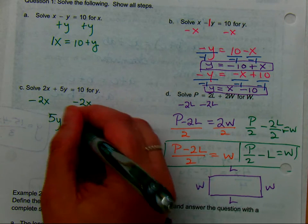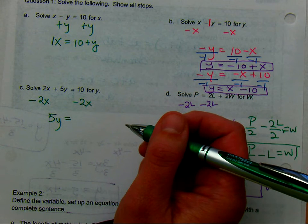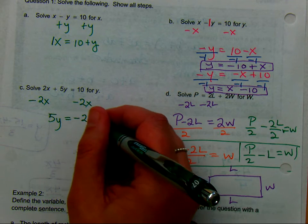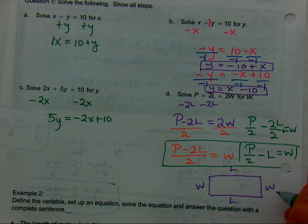Okay, we have 5Y equals, and how did you write this? Yeah, and another way I just want to show you, you could also write negative X plus 10. I just want to show you the different variations that you'll see. Okay, and now what would you do to get Y by itself?